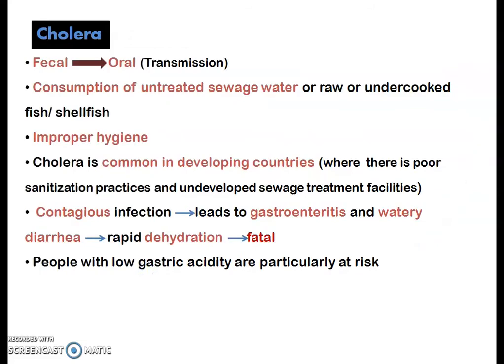The disease caused by Vibrio cholerae is cholera. Transmission is via the fecal-to-oral route, by consumption of untreated sewage water or raw or undercooked fish and shellfish that dwell in untreated water. Cholera is common in developing countries due to poor sanitation practices and undeveloped sewage treatment facilities.